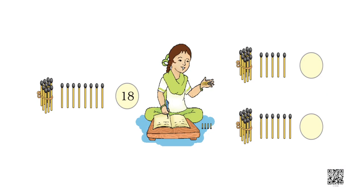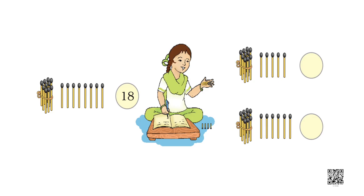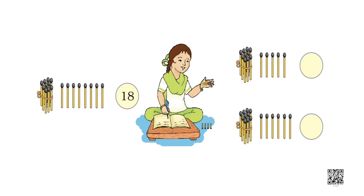This way you can read all these numbers and write them. Now seen on the screen — how is 18 written? 1 and 8. But what does it mean? 1 group of 10 and 8 ones. There are 2 blanks — can you see? 1 group of 10, and how many other magic sticks are shown here? 5. You count and write, and tell your mama how many these are.